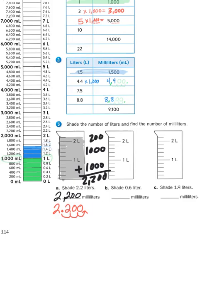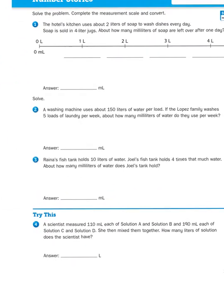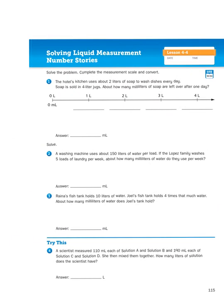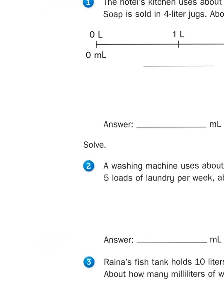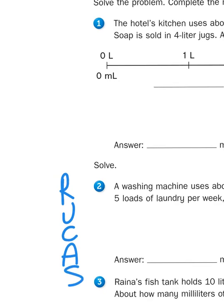Now let's check out some of the story problems on the second page, on page 115. Let's take a look at number 2. It says a washing machine uses about 150 liters of water per load. If the Lopez family washes 5 loads of laundry per week, about how many milliliters of water do they use per week? This looks like a job for RUCKUS. I'm going to reread that problem, underline the question, circle the important information, come up with an action plan, and then solve it.